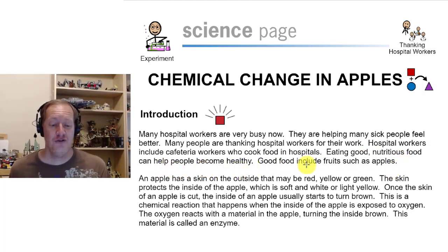Eating good, nutritious food can help people become healthy. Good food includes fruits such as apples. An apple has a skin on the outside that may be red, yellow, or green. The skin protects the inside of the apple, which is soft and white or light yellow. Once the skin of an apple is cut, the inside of an apple usually starts to turn brown.